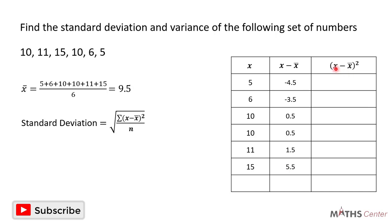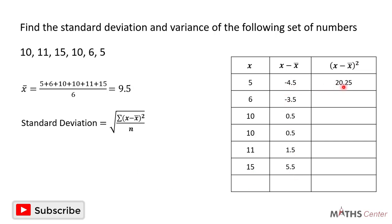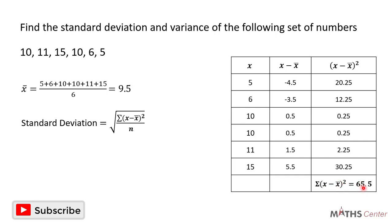We can now find x minus the mean squared by squaring all the values. Negative 4.5 squared is 20.25. Negative 3.5 squared is 12.25. 0.5 squared is 0.25. Another 0.5 squared is 0.25. 1.5 squared is 2.25, and 5.5 squared is 30.25. Adding everything together, sigma (x minus the mean) squared equals 65.5.